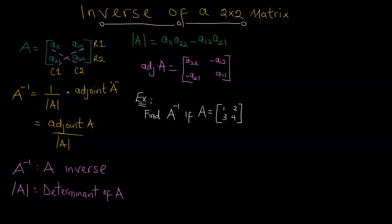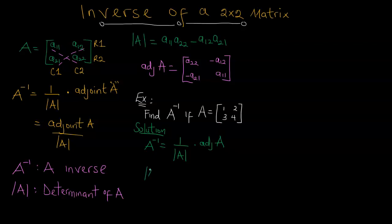Let's take a few examples. Find A inverse if A equals [[1, 2], [3, 4]]. We know that A inverse equals 1 over the determinant of A times the adjoint of A. The two elements on the leading diagonal are 1 and 4. So the determinant is 1 times 4 minus 2 times 3, which equals 4 minus 6, giving a determinant of negative 2.